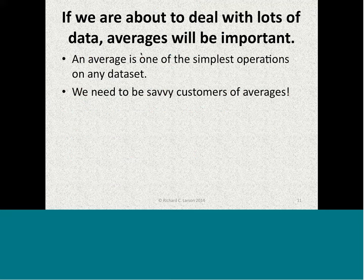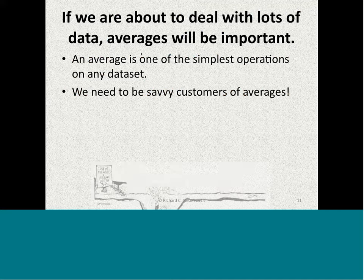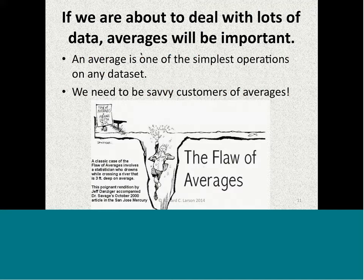If we're to deal with lots of data, averages will be important. Can you imagine a simpler operation than forming an average? But we need to be savvy customers of averages, not naive ones. Consider this cartoon: the average river depth is three feet. A non-swimmer is crossing, but most of it is a foot and a half — and then there's a place that goes down ten feet. This poor person could drown. That's a key example of the flaws of averages.